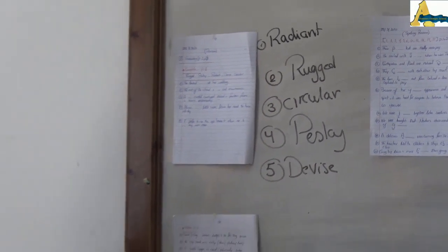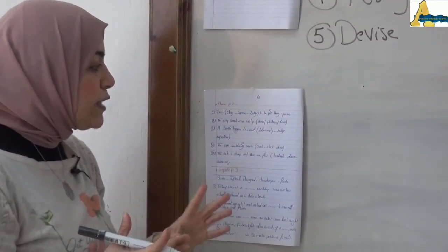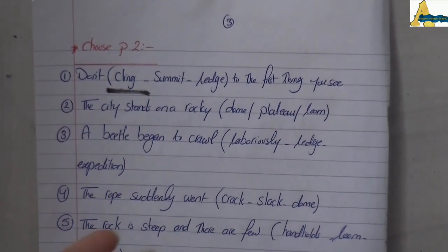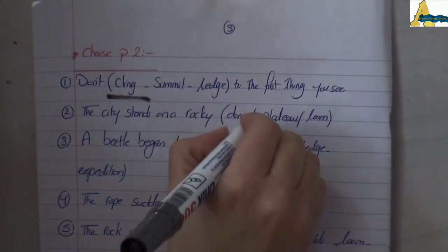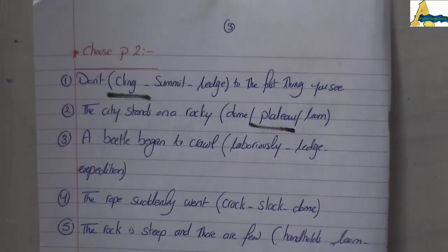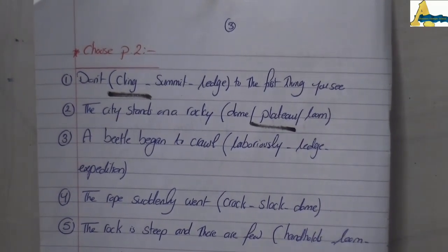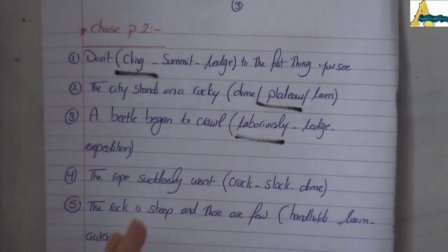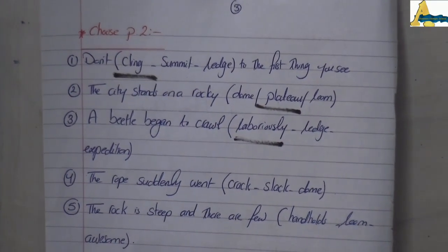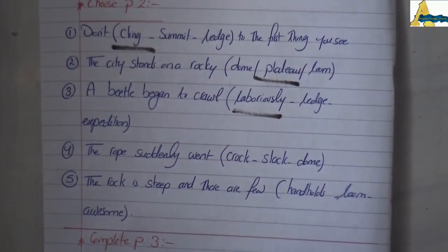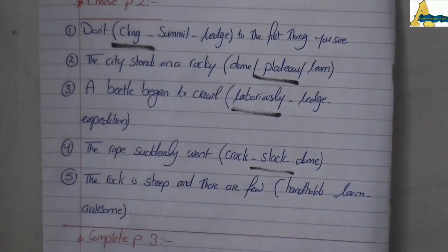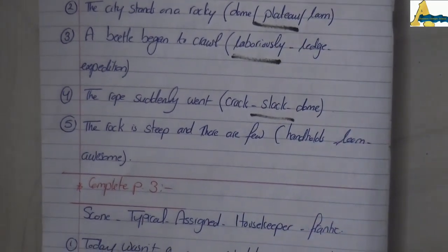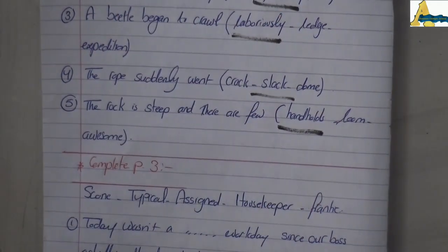Let us move to the second exercise: choose the correct answer. In number one, 'don't cling to the first thing you see' — the answer is cling. In number two, 'the city stands on a rocky plateau' — plateau is a noun meaning a place above sea level. In number three, 'a beetle began to crawl laboriously' — the answer is laboriously, exerting great effort over a long time. In number four, 'the rope suddenly went slack' — slack means loose or untight. In number five, 'the rock is steep and there are few hand holes' — places or parts you can grip with your hand.